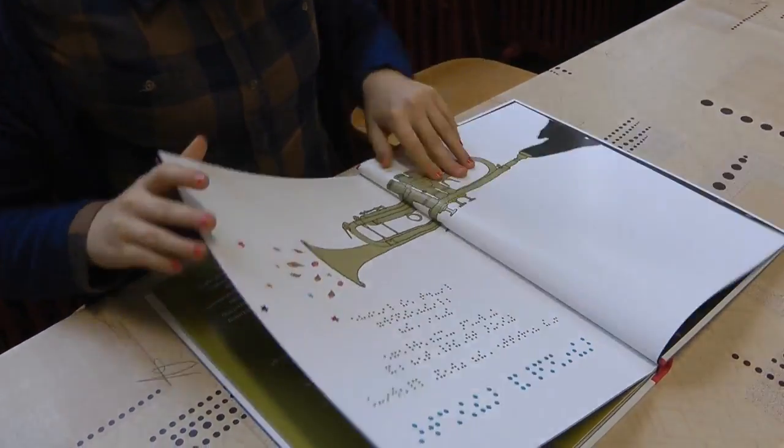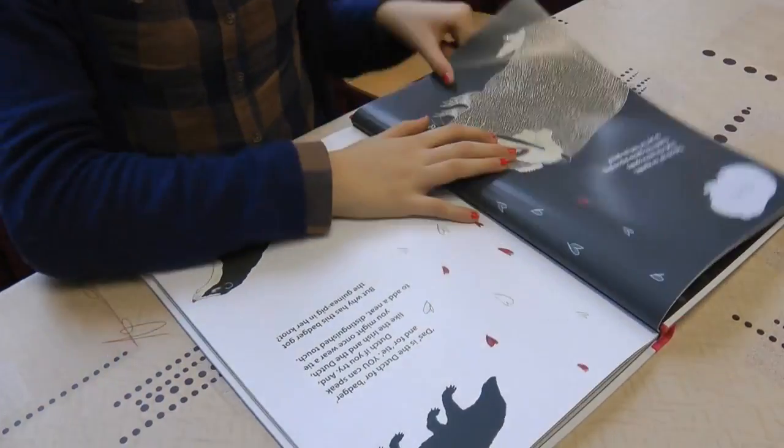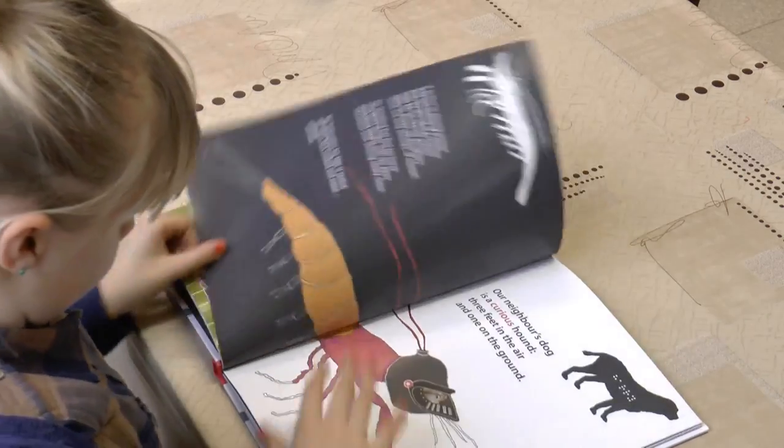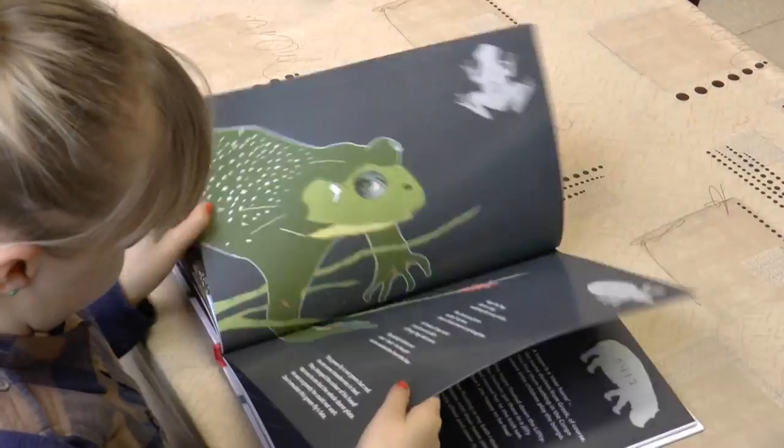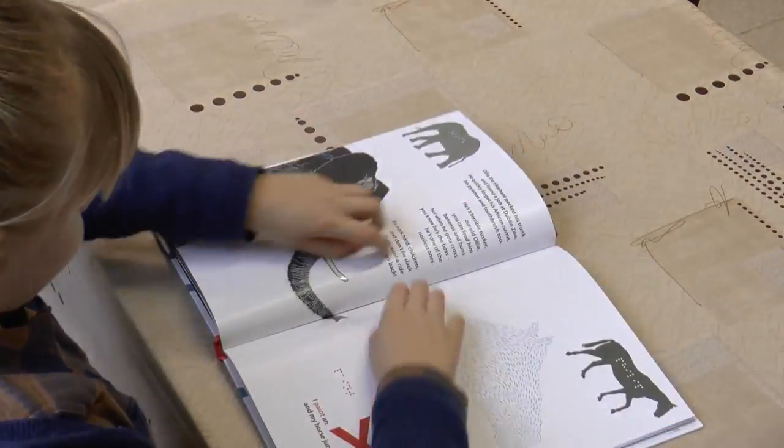Written by Jan de Witte, illustrated by Freya Vlerik, translated by Marcus Cumberlich and Martin Burke, and read by Karl Braun. Published by Blindenzorg Licht & Liefde, Belgium, and NCBI, Ireland.